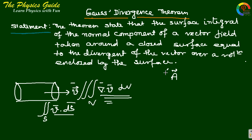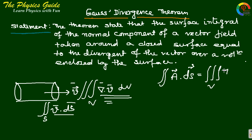In general, for any vector A, Gauss's divergence theorem states that the surface integral of A dot dS equals the volume integral of the divergence of A — that is, the integral of del dot A dv.